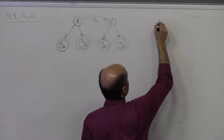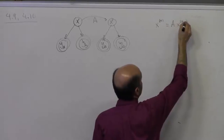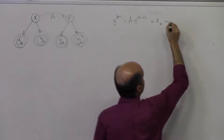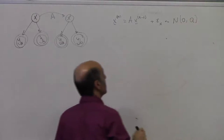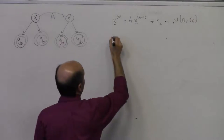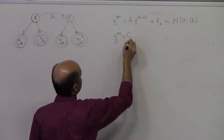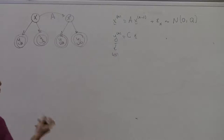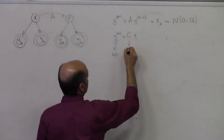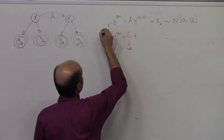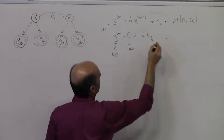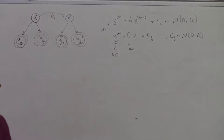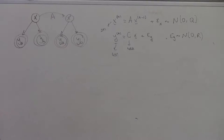X in trial N is equal to A times X in trial N minus 1 — these are 2-by-1 vectors — plus epsilon_X, where epsilon_X is normally distributed with mean 0 and variance-covariance matrix Q. And your observation Y of N is going to be C times vector X, where your observation is a 4-by-1. You get two two-dimensional vectors. So X is 2-by-1, C is 4-by-2, plus epsilon_Y, where epsilon_Y is normally distributed with mean 0 and variance R. Say that this is the system I have — I want to estimate where I am.